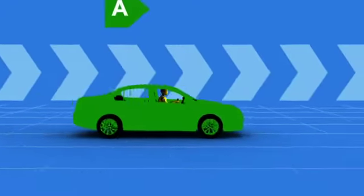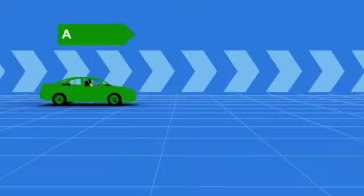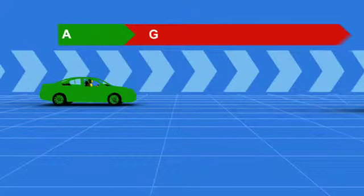An A-rated tyre provides the shortest braking distance on wet roads, whereas a G-rated tyre will have the longest braking distance in the wet.